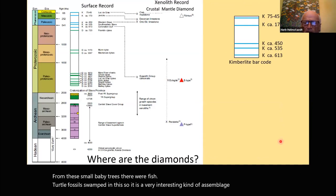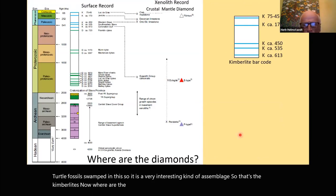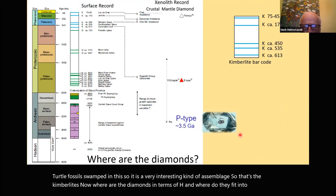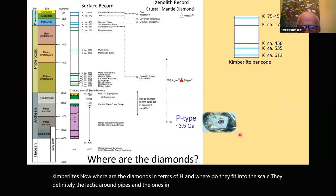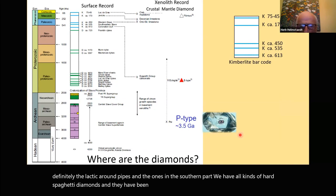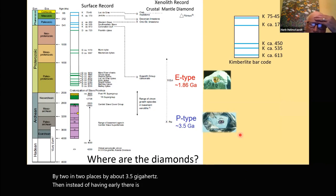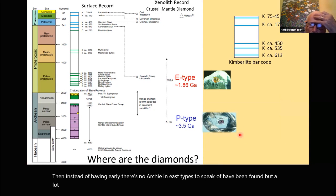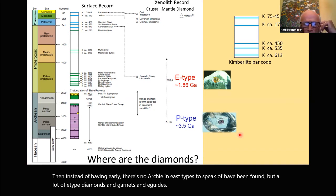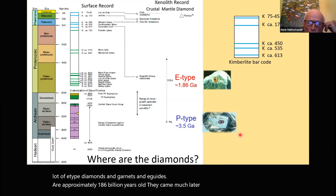Where are the diamonds in terms of age? The Lac de Gras pipes and those in the southern part have all kinds of harzburgitic diamonds dated at about 3.5 Ga. Instead of having early Archean E-types, it has been found that E-type diamonds and garnets in eclogites are approximately 1.86 billion years old — they came much later, post-Archean. The kimberlite 'barcode' shows five generations, and each one may have diamonds — all have an original remnant of these Archean diamonds.